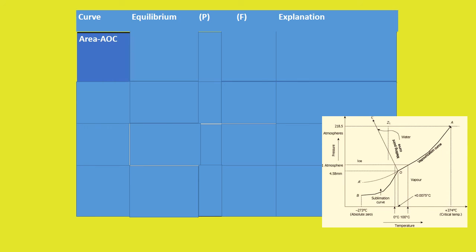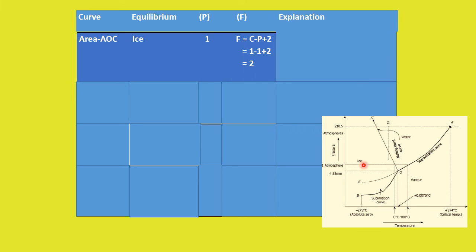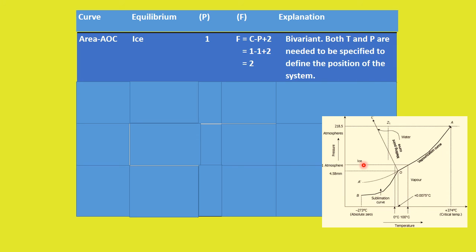In the area BOC, we have ice. The phase is 1, so F = 2 — a bivariant system. Both temperature and pressure are required to define the system in this area.